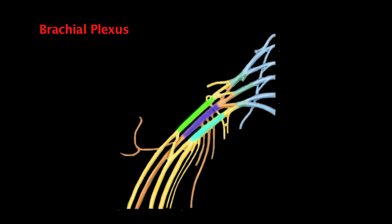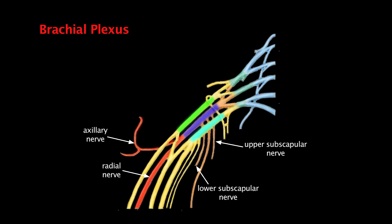For the branches off the posterior cord, the main branch that the posterior cord essentially turns into is the radial nerve. Moving up, we have the axillary nerve, which supplies the deltoid. Then we have the lower and upper subscapular nerves on either side of the thoracodorsal nerve. A good way to remember these three is that they branch off around the same location: the most distal one is the lower subscapular nerve, the most proximal is the upper subscapular nerve, and the one between them is the thoracodorsal nerve.